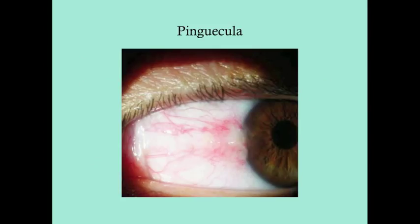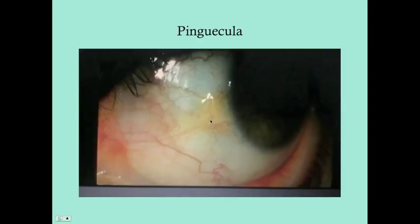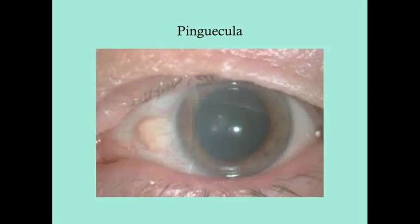Here are examples of pingueculae — right on that limbus, right on the periphery of the iris. Interestingly, the word pinguecula comes from the Latin word 'pingue,' which means fat.